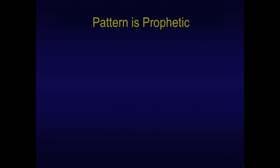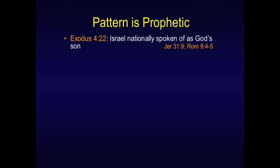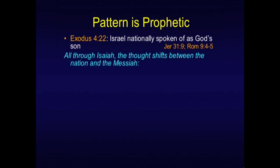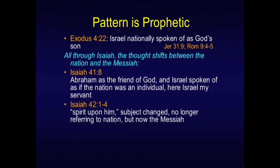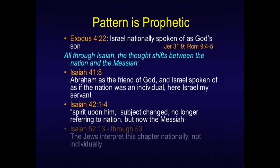Hermeneutically, we learned that pattern is prophecy. 'Out of Egypt I've called my son' is a really strange use of Hosea 11:1 — pattern is prophetic. Often in Scripture the person of Christ and the nation Israel are used almost interchangeably. Israel is called God's firstborn in Exodus 4:22. All through Isaiah the thought shifts between the nation and the Messiah. The capstone of this is Isaiah 53, where the Jews interpret this chapter as referring only nationally, not individually. But all you have to do is read it yourself and come to your own conclusions — it's pretty obvious.